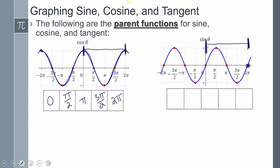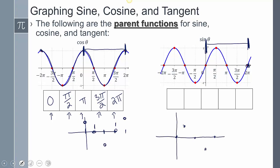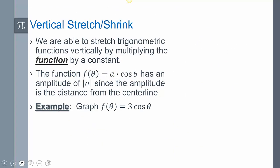We're going to use that idea of the cycle very shortly, but we need to have these parent graphs memorized. If we have these parent graphs memorized, the rest is fairly easy. When I think cosine, I think: starts at the amplitude, crosses, goes below, crosses, back up at the amplitude — and the values are zero, pi halves, pi, three pi halves, two pi. Same thing with sine — I have that image in my brain.